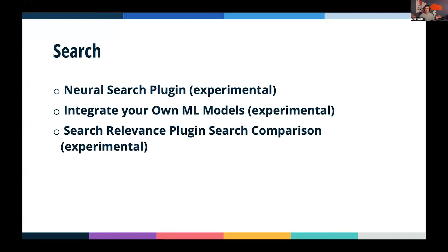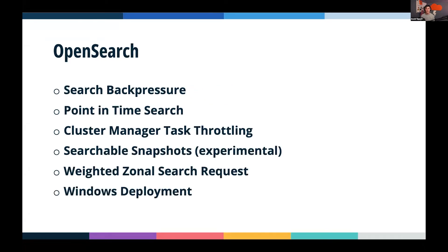We have the search relevance plugin — a search comparison tool — which allows you to run two searches side by side using different settings, so you can compare whether results are more relevant with, say, neural search compared to BM25. It can help you with tuning your search and making sure you're getting the most relevant results.